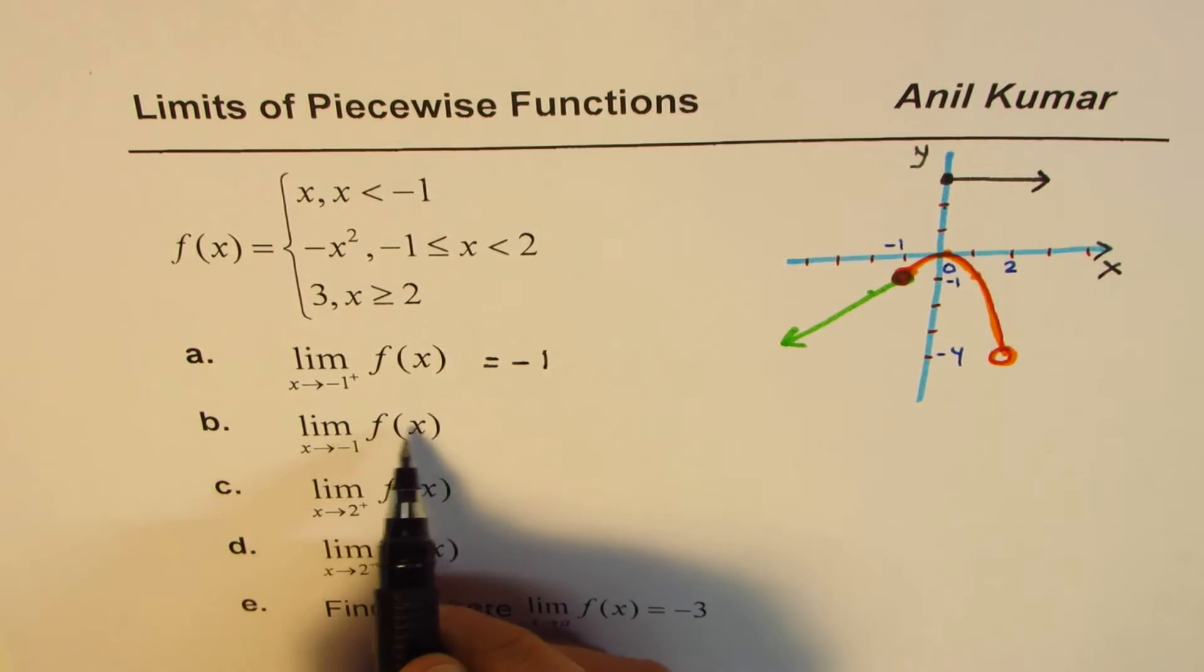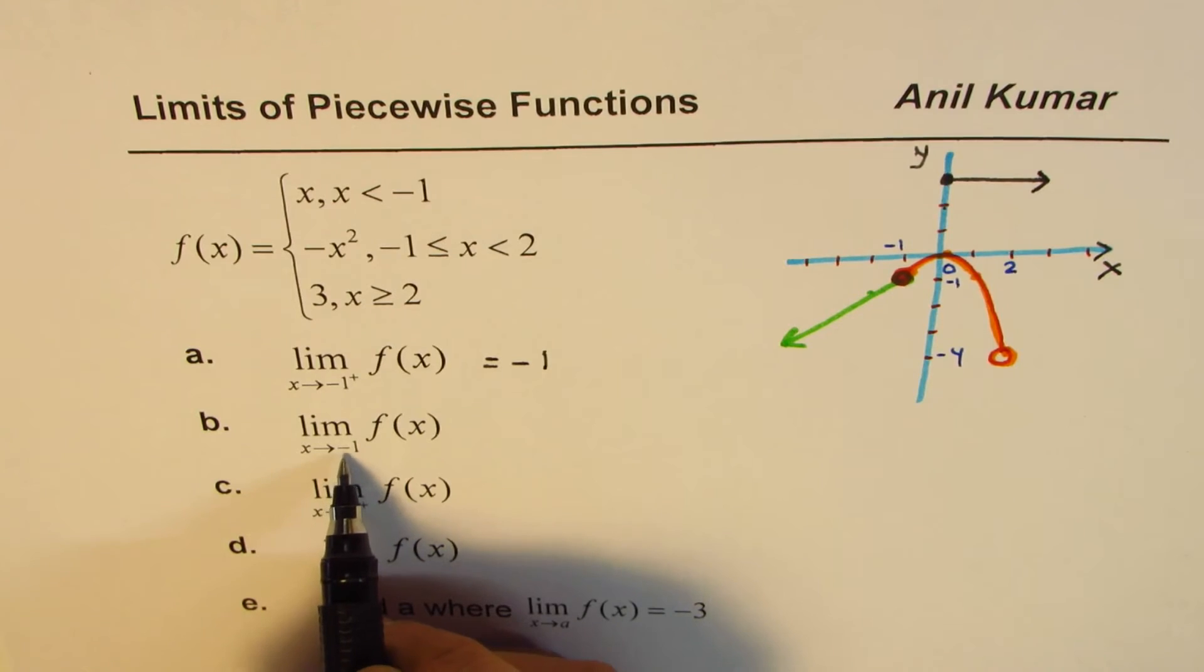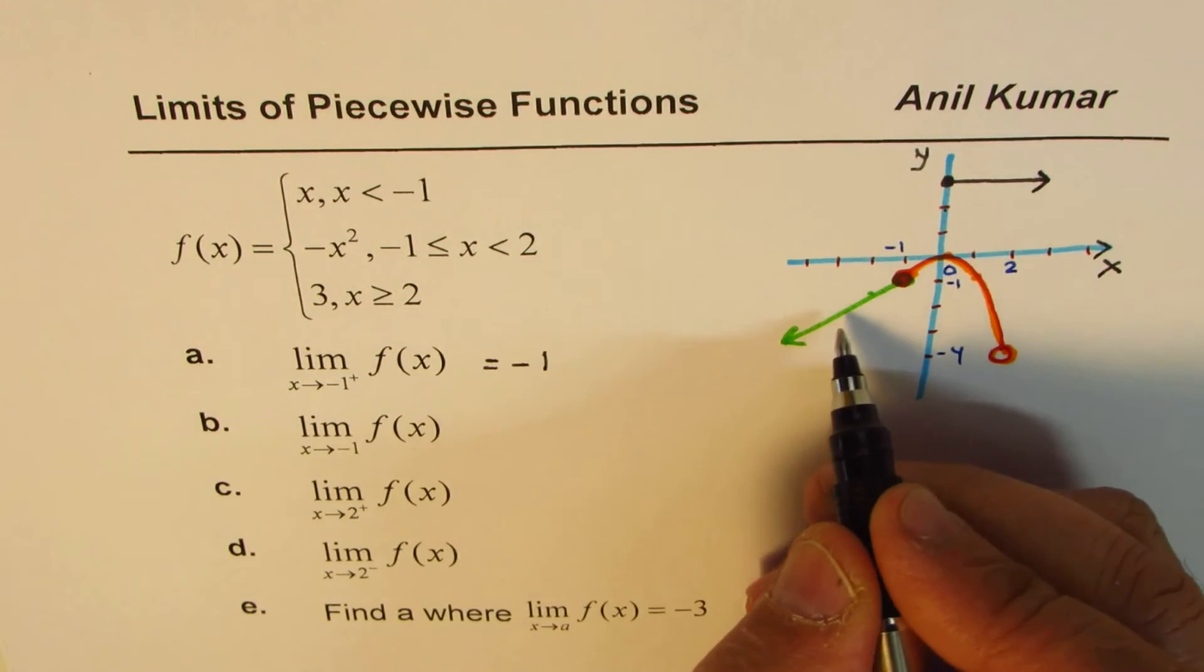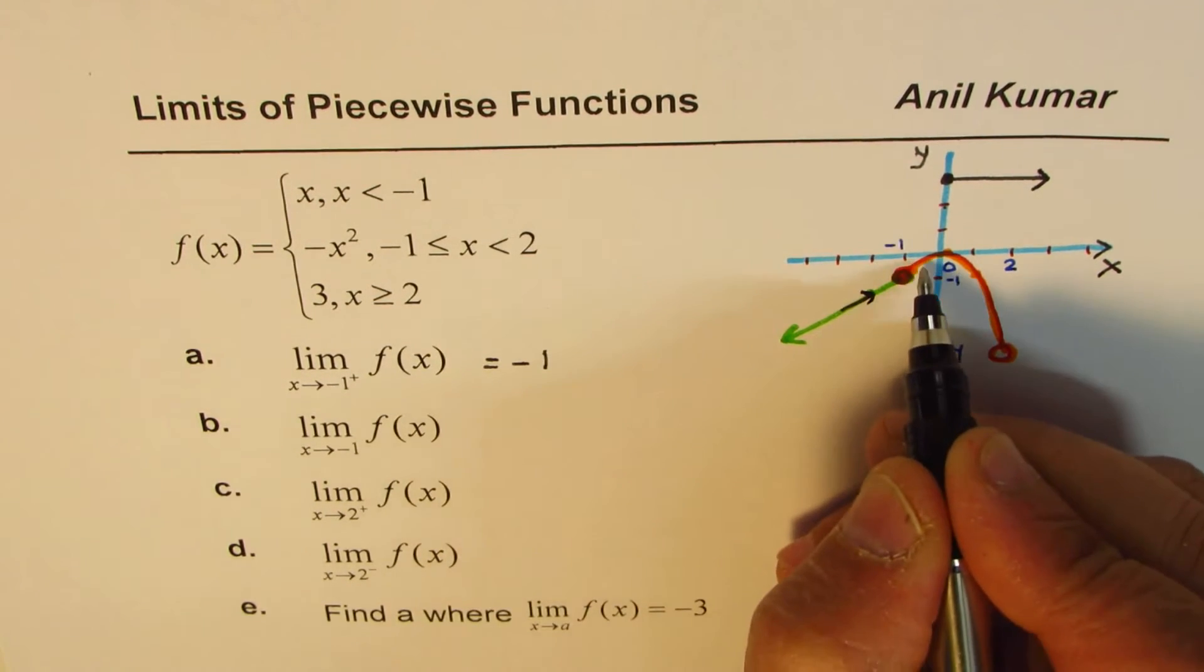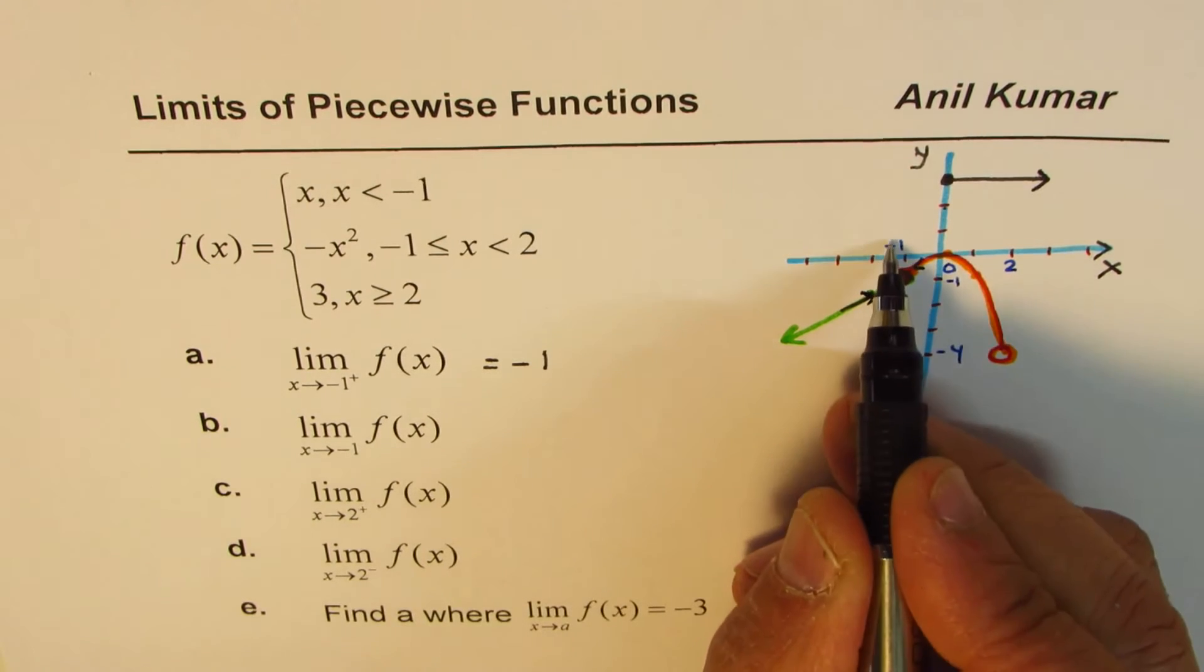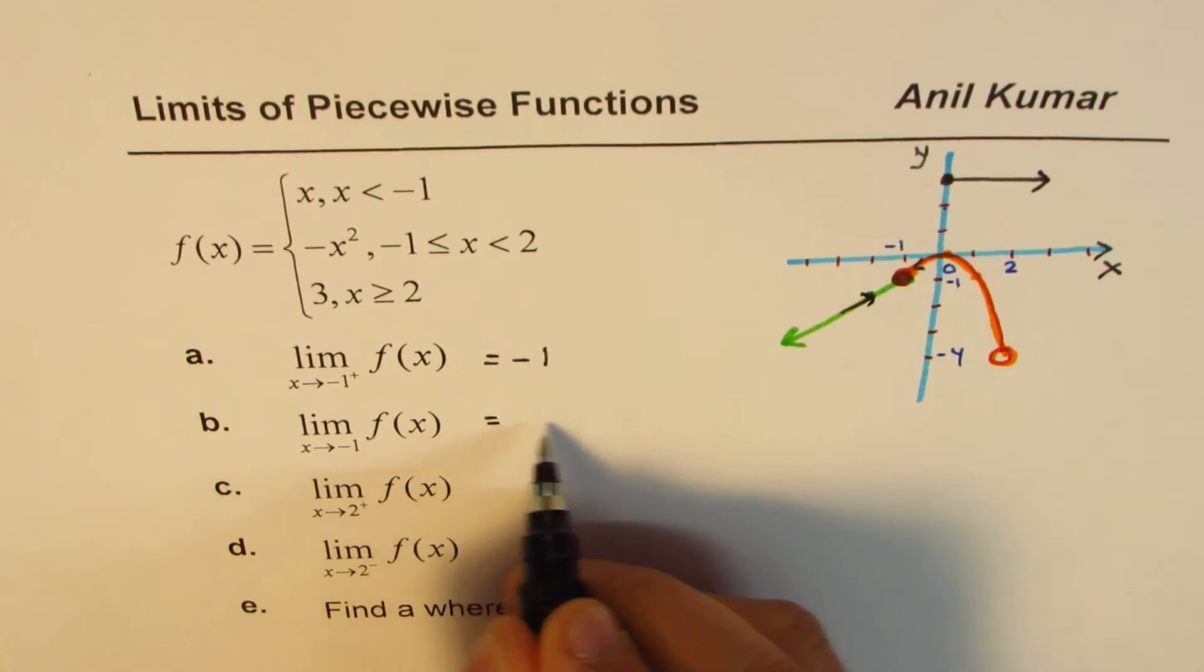Next is, limit of f(x) when x approaches -1. What we see here is, that if you approach from this side or from that side, you are approaching -1. So this answer is also -1. Does it make sense to you?